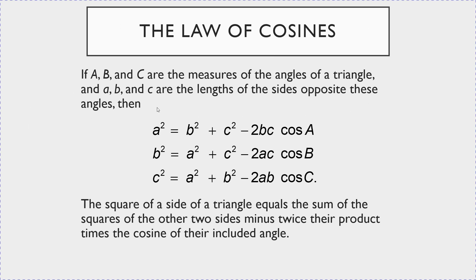If capital A, B, and C are the measures of the angles of a triangle, and lowercase a, b, and c are the lengths of the sides opposite those angles, then the formulas are: a² = b² + c² − 2bc·cos(A); b² = a² + c² − 2ac·cos(B); c² = a² + b² − 2ab·cos(C). In other words, the square of a side equals the sum of the squares of the other two sides minus twice their product times the cosine of their included angle.